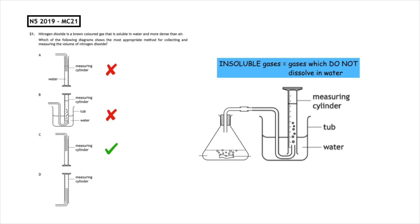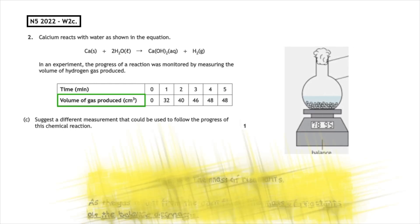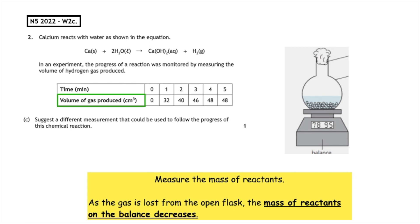This past paper question is from National 5 2022 written. Suggest a different measurement that could be used to follow the progress of this chemical reaction. We can see here that the volume of gas produced is being collected, so instead of measuring the products, we can measure the mass of reactants.